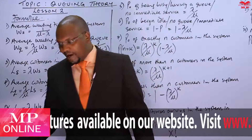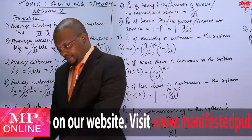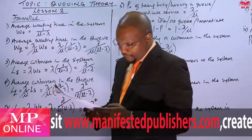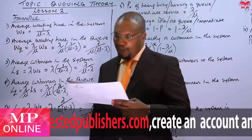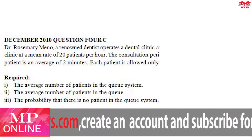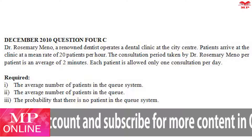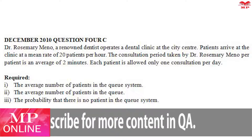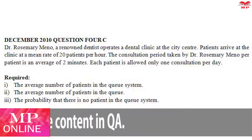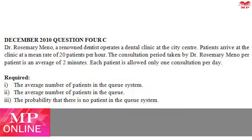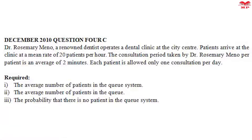We have several questions in our past paper. Let's look at December 2010, question four, part C. You have been given that Dr. Rosemary Meno, a renowned dentist, operates a dental clinic at the city center. Patients arrive at the clinic at a mean rate of 20 patients per hour. The consultation period taken by Dr. Rosemary Meno per patient is an average of two minutes. Each patient is allowed only one consultation per day. Required: one, the average number of patients in the queuing system; two, the average number of patients in the queue; and three, the probability that there is no patient in the queuing system.